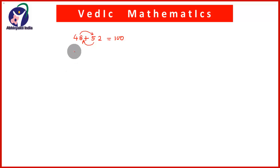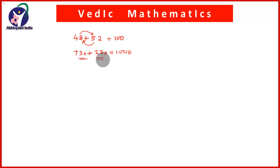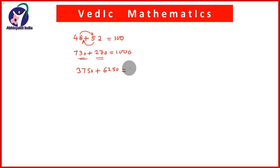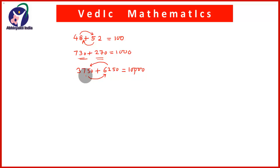Another pair: 730 plus 270 equals 1000, and therefore 730 and 270 are both called as the complements of each other. Another pair: 3,750 plus 6,250 equals 10,000, and therefore 10,000 is a base number, so 3,750 is a complement of 6,250.